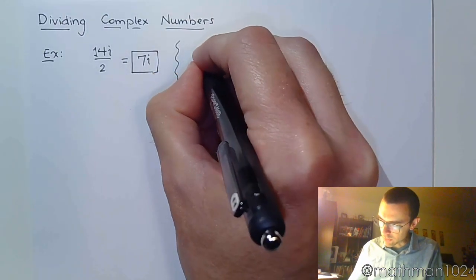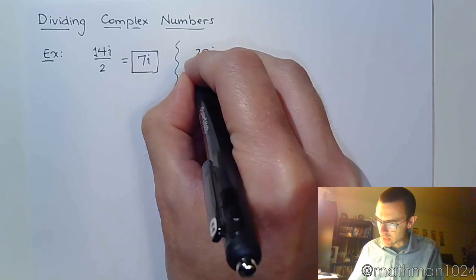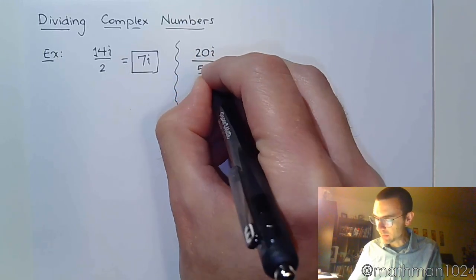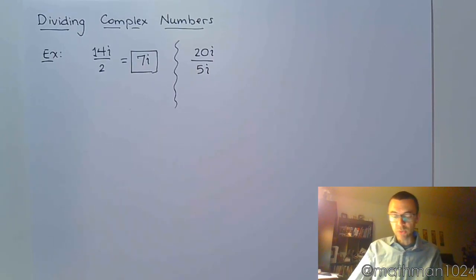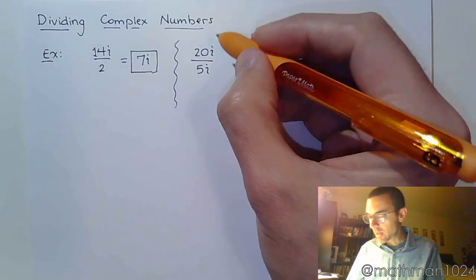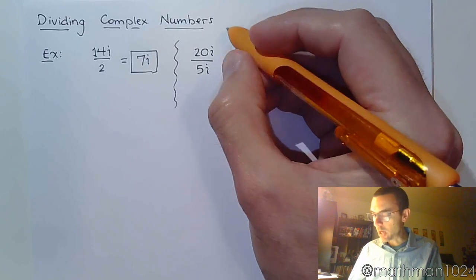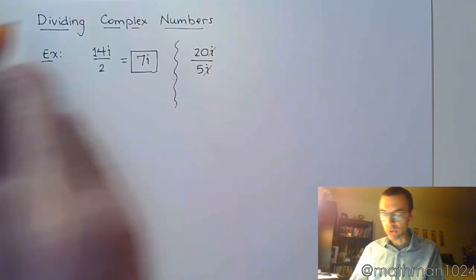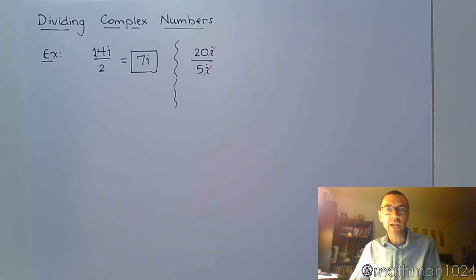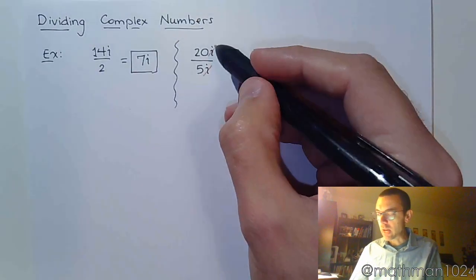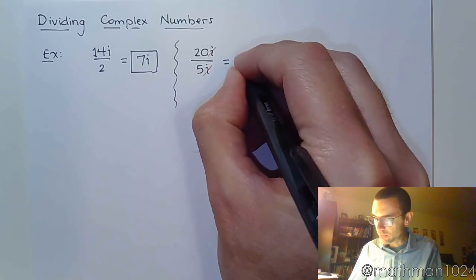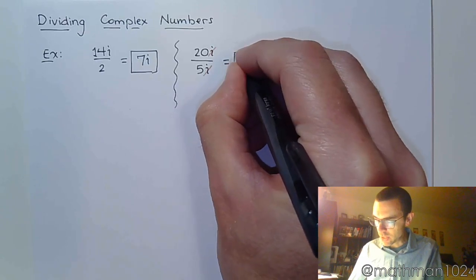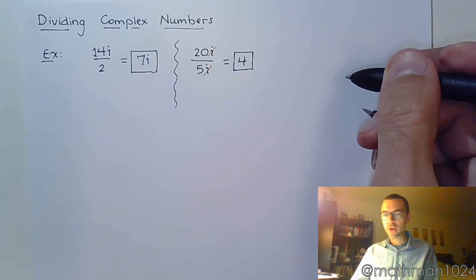Or, if I take 20i over 5i, one of the things we need to notice here is that you have a factor of i in both the numerator and denominator, so these guys can reduce away. It's just like having x over x. That reduces to 1, the i is reduced to give you a factor of 1, and you're left with 20 over 5, and we just get 4. Nothing too out of the ordinary, right?